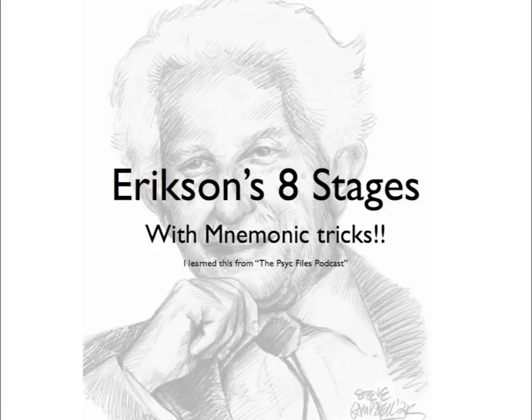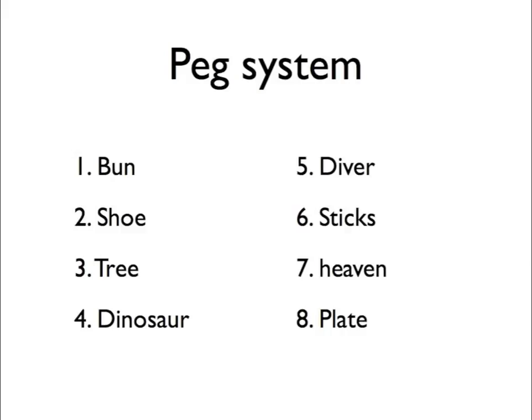In this edition of freetestprep.net, we are going to learn Erickson's eight stages of development with mnemonic tricks. The trick we're going to use today is called the peg system. The peg system basically uses a figurative code to represent an image and a number.